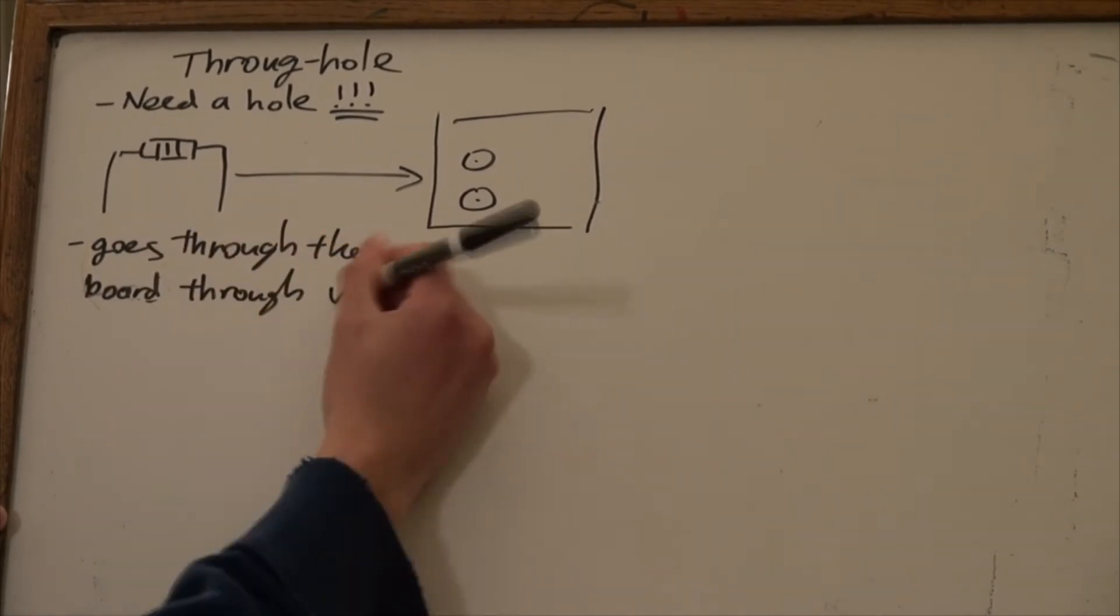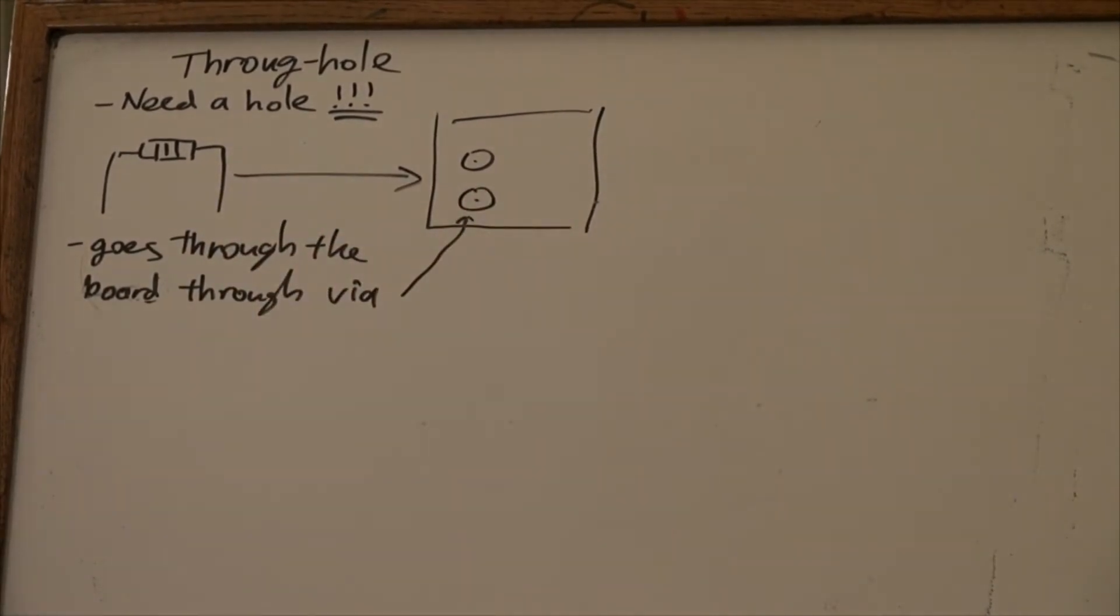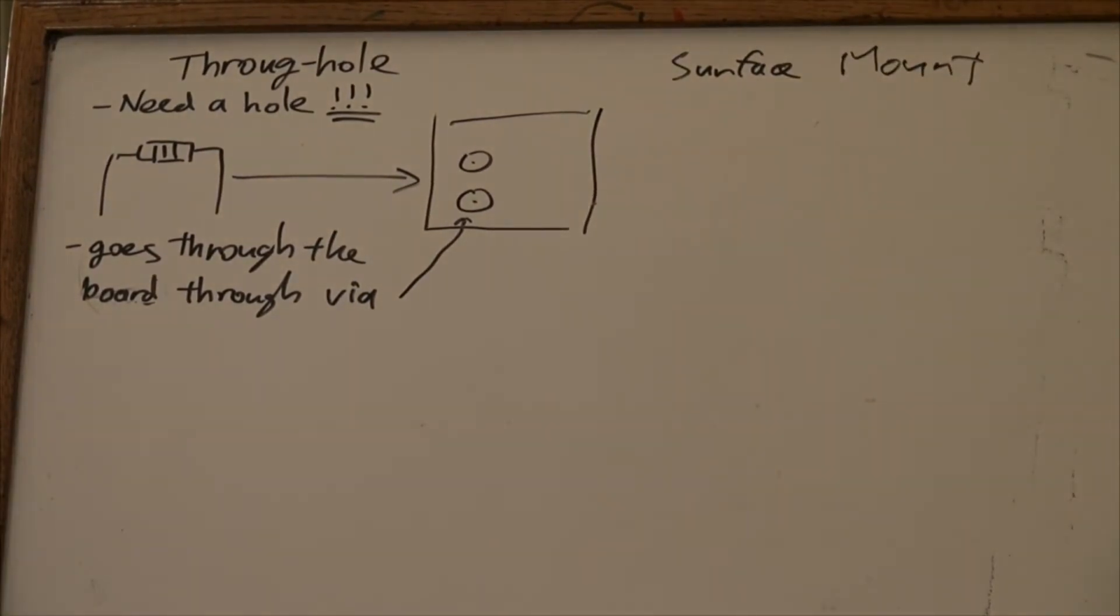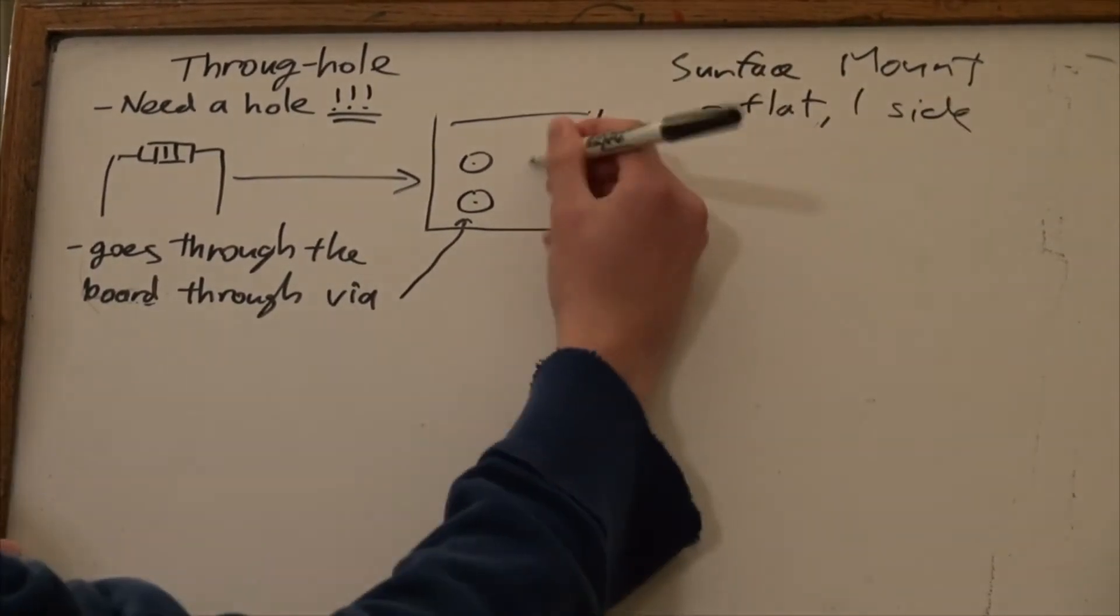On the other hand, surface-mount components are flat and do not require a via. Instead, they are connected by conductive pads, which they are then soldered to.